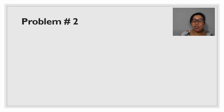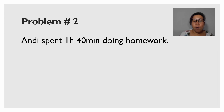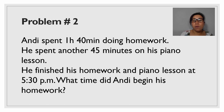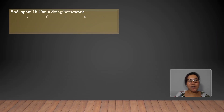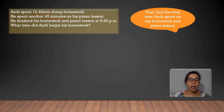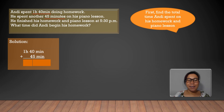Now let's solve the second problem. Andy spent 1 hour and 40 minutes doing homework. He spent another 45 minutes on his piano lesson. He finished his homework and piano lesson at 5:30 PM. Question: what time did Andy begin his homework? To simplify the problem, first find the total time Andy spent on his homework and piano lesson. We simply add 1 hour and 40 minutes plus 45 minutes.